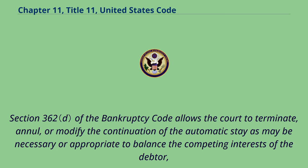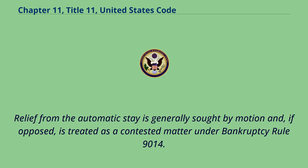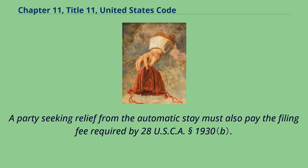Section 362 of the Bankruptcy Code allows the court to terminate, annul, or modify the continuation of the automatic stay as may be necessary or appropriate to balance the competing interests of the debtor, its estate, creditors, and other parties in interest, granting the bankruptcy court considerable flexibility to tailor relief to the circumstances. Relief from the automatic stay is generally sought by motion and, if opposed, is treated as a contested matter under Bankruptcy Rule 9014. A party seeking relief from the automatic stay must also pay the filing fee required by 28 U.S.C.A. Section 1930.